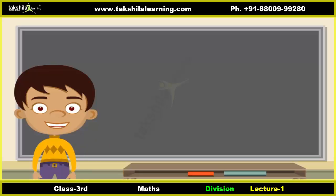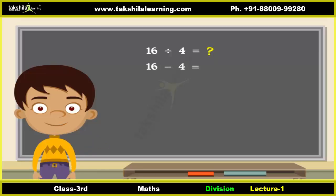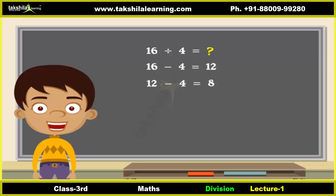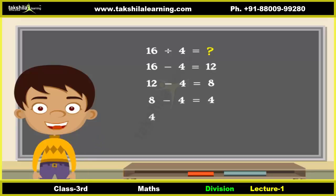We will now learn division by subtraction. Let us divide sixteen by four. Subtract four from sixteen — we get twelve. Now subtract four from twelve — we get eight. Subtracting four from eight — we get four. Similarly, subtract four from four — we get zero. Remember to keep subtracting till we get zero.